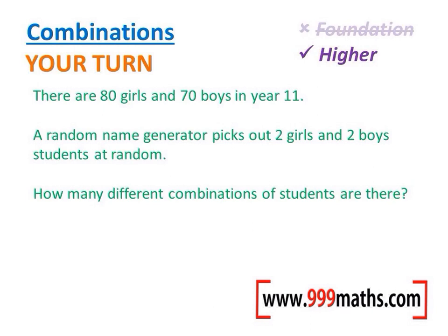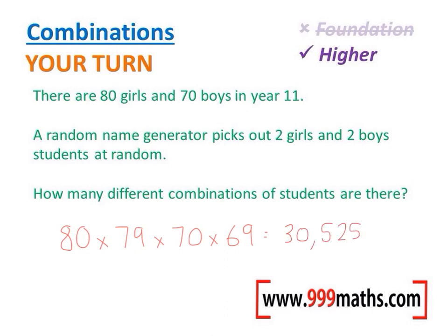In terms of the girls, for the first girl there is a choice of 80, and for the second girl there is a choice of 79. In terms of the boys there are initially 70, and for the second boy there will be 69. So we've done the boys and the girls separately — just multiply those together on a calculator, and we'll be left with the answer which is 30,525,600.